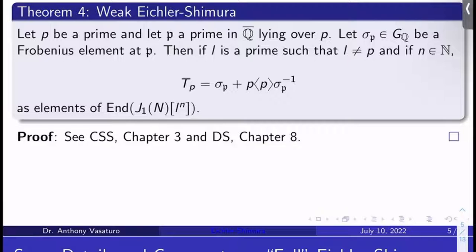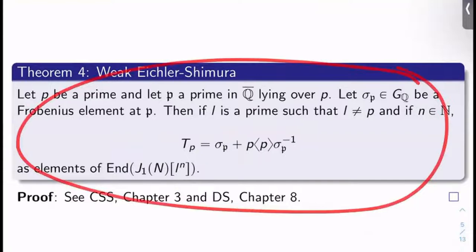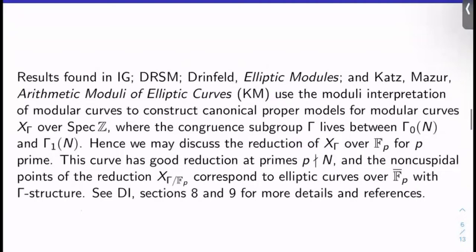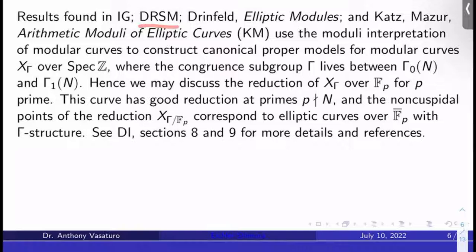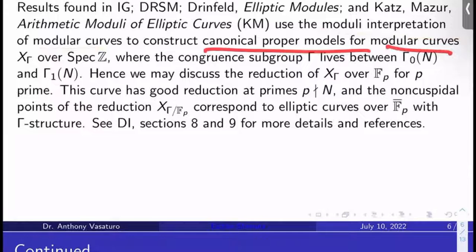I'm going to give you much more insight as to what's going on here, even though this version of Eichler-Shimura is all we'll really need. Some details and comments on the full Eichler-Shimura: results found in Igusa's paper, in Deligne-Rapoport, in Drinfeld's elliptic modules, and in Katz-Mazur's arithmetic moduli of elliptic curves — combined — show that you can use the moduli interpretation of modular curves to construct canonical proper models for modular curves X_Γ over Spec ℤ. So you can do better than just constructing things over ℚ — you can construct them over ℤ. Here Γ is any congruent subgroup between Γ₁(N) and Γ₀(N).